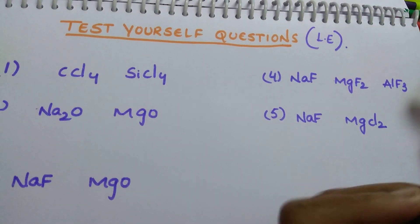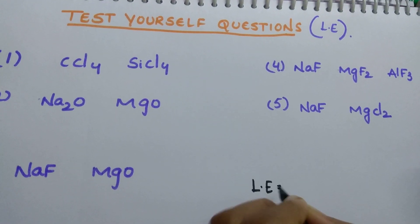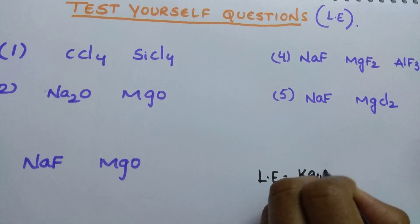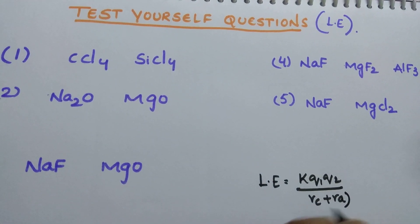We discussed one simple formula to calculate lattice energy questions. What is that students? Lattice energy is equal to K Q1 Q2 by radius of cation plus radius of anion.